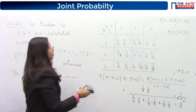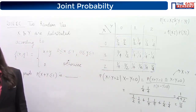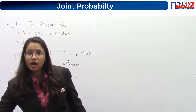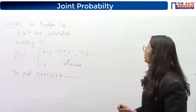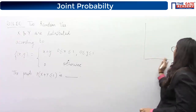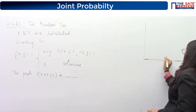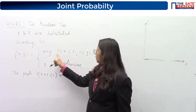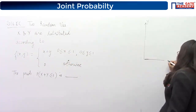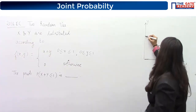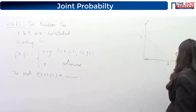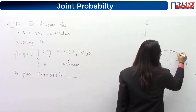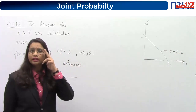Now let's look at the case when X and Y are continuous random variables. For continuous distributions we have a curve. With two random variables, we plot them on X and Y axes. It is given that X varies from 0 to 1 and Y also varies from 0 to 1. The distribution varies along the line X + Y = 1.